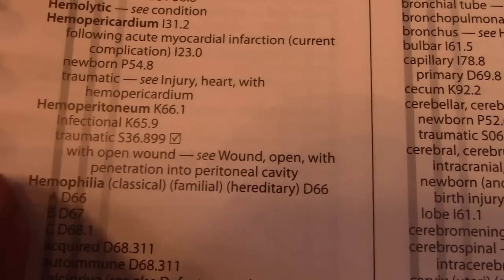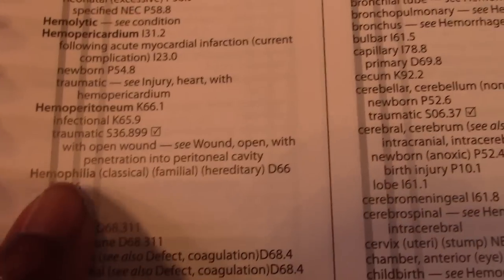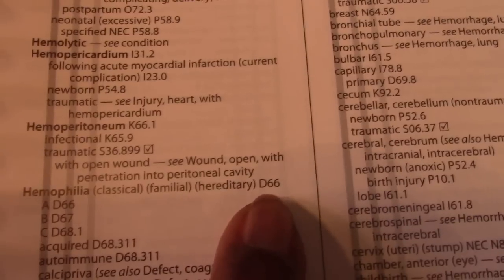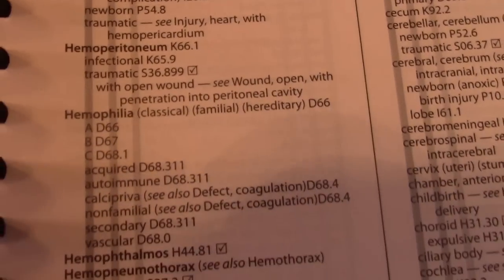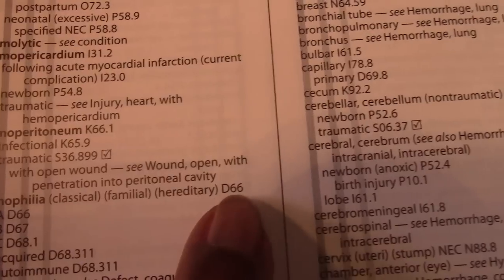The second one was classic hemophilia. Main term: hemophilia. I want you to see me actually code these — H-E-M-O — main term hemophilia. It's classic. Look under subterms to find classic; it's a non-essential modifier, which leads us to code D66. I could also look under subterms for classic, but it's not listed there. So I look at my non-essential modifiers — classic hemophilia — D66.